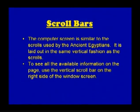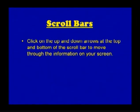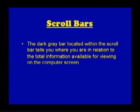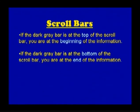The computer screen is similar to the scrolls used by the ancient Egyptians — it is laid out in the same vertical fashion. To see all the available information on the page, use the vertical scroll bar on the right side of the window. Click on the up and down arrows at the top and bottom of the scroll bar to move through the information. The dark gray bar within the scroll bar tells you where you are in relation to the total information available. If the dark gray bar is at the top, you are at the beginning of the information; if it is at the bottom, you are at the end.